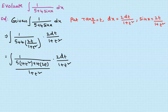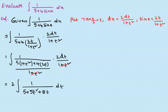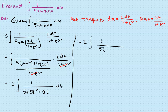The (1+t²) terms cancel out. Taking 2 as a constant outside the integral, we get: 2·∫ 1/(5t² + 8t + 5) dt. This is now in the standard form of integration type: 1 by (at² + bt + c) dt.